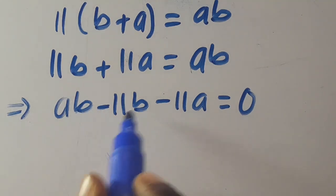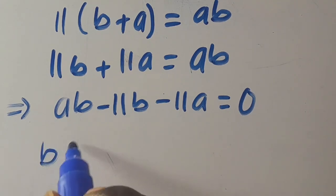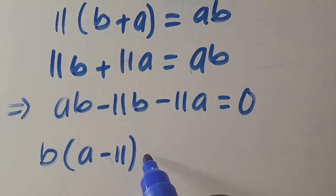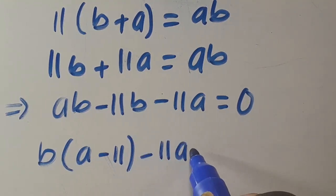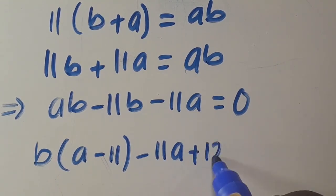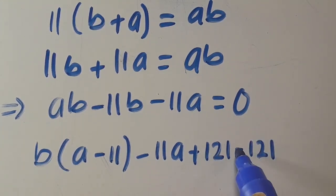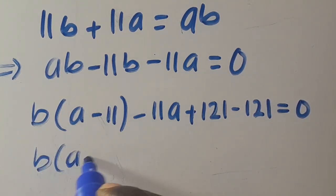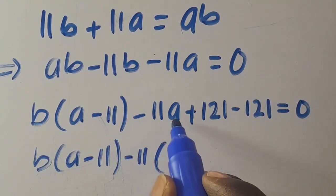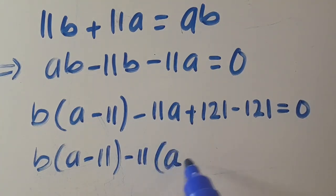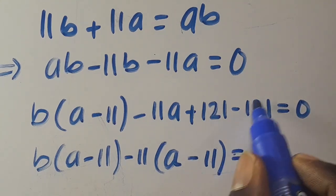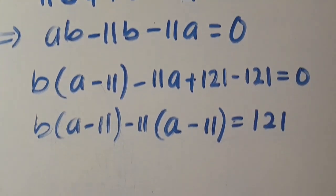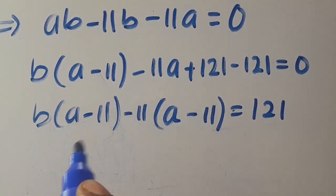Factoring: b is common in the first two terms, giving b(a - 11) - 11a = 0. Adding 121 to both sides and factoring: (b - 11)(a - 11) = 121.